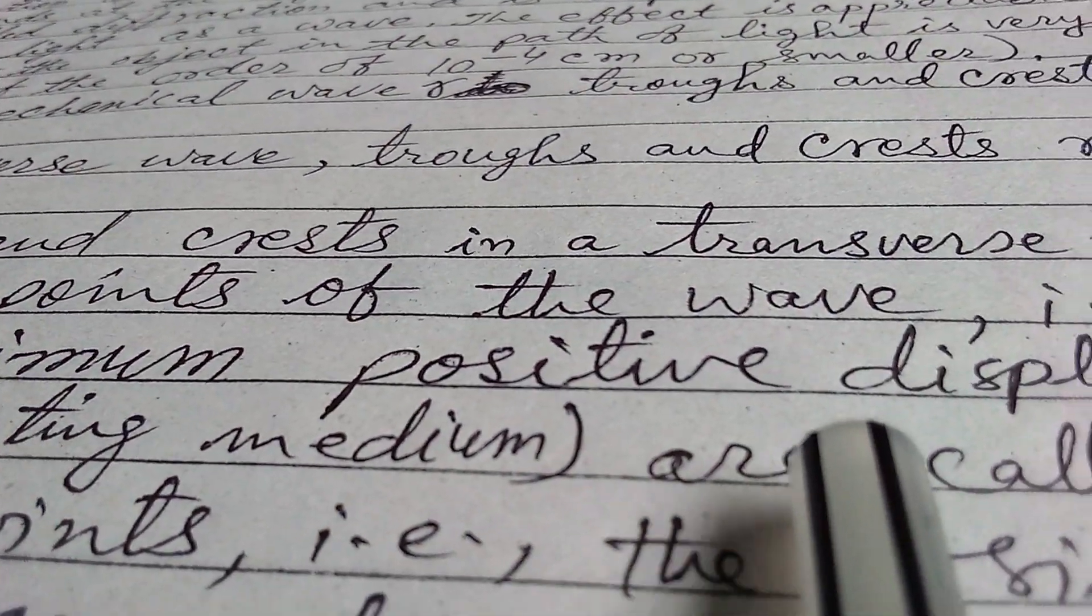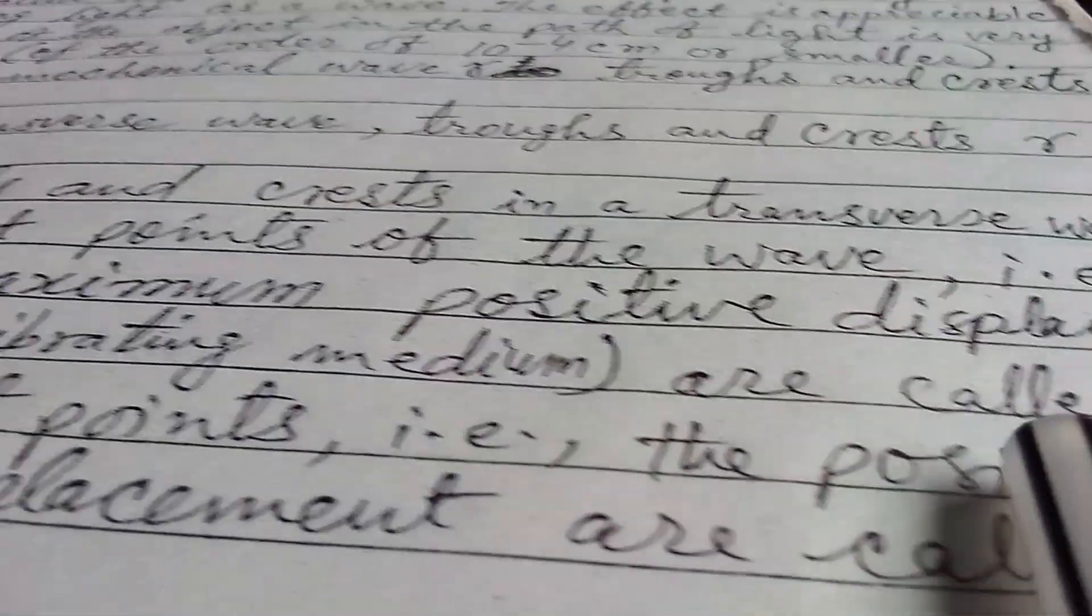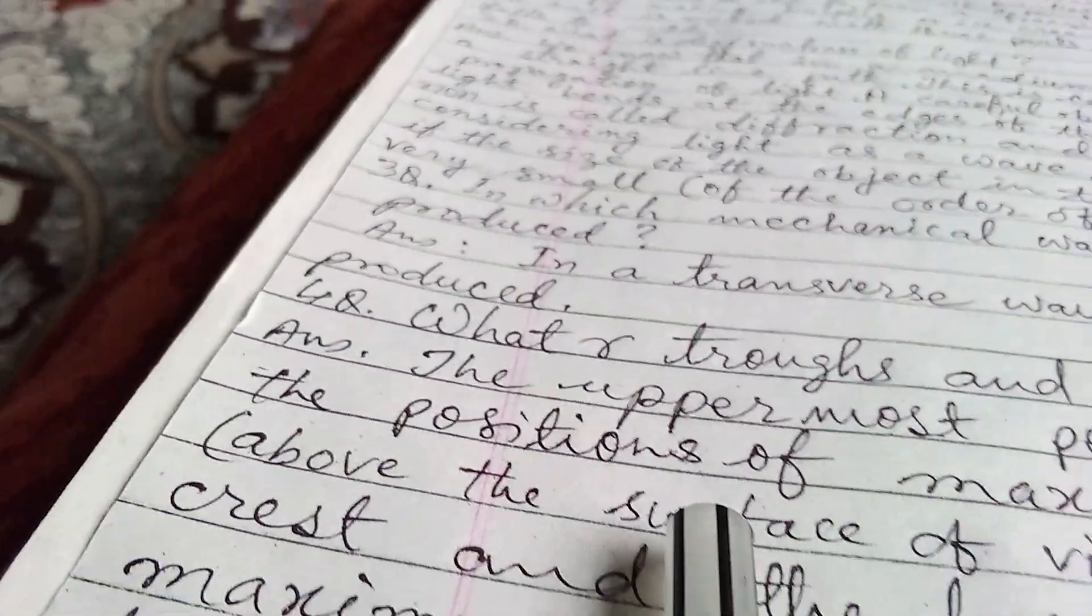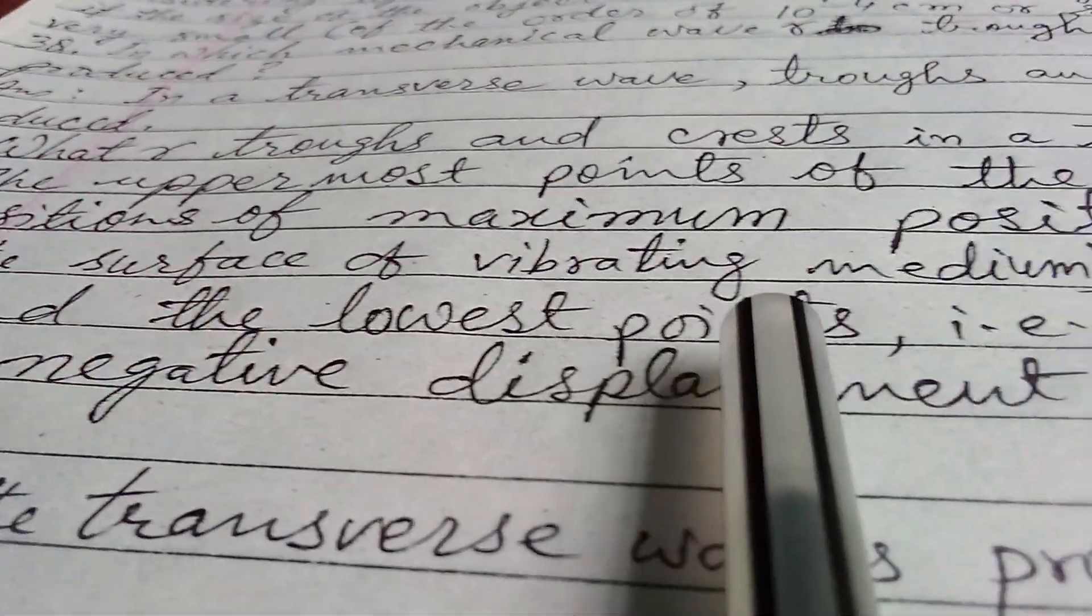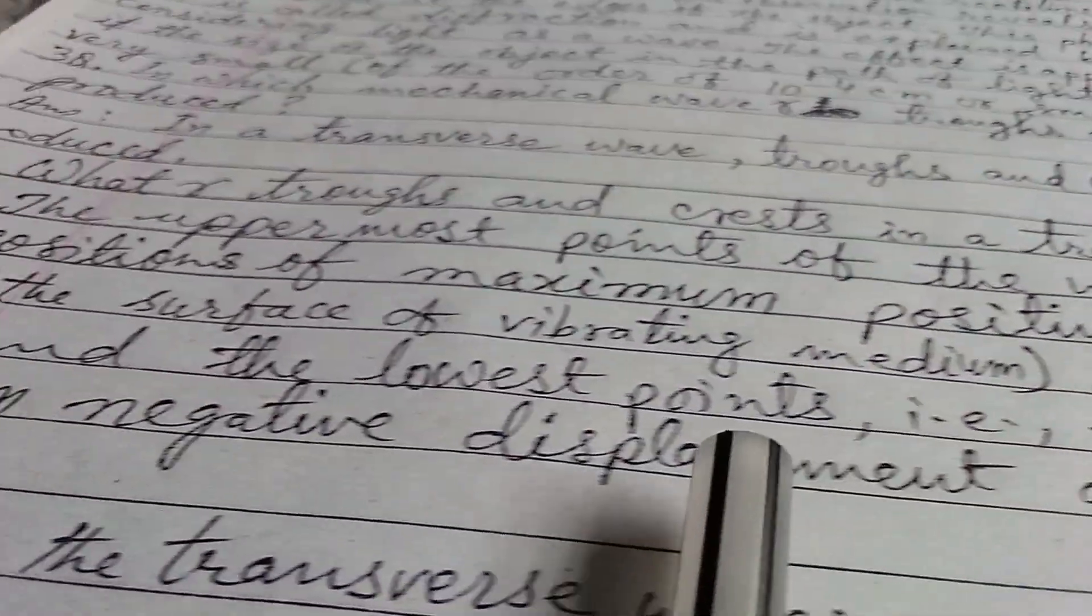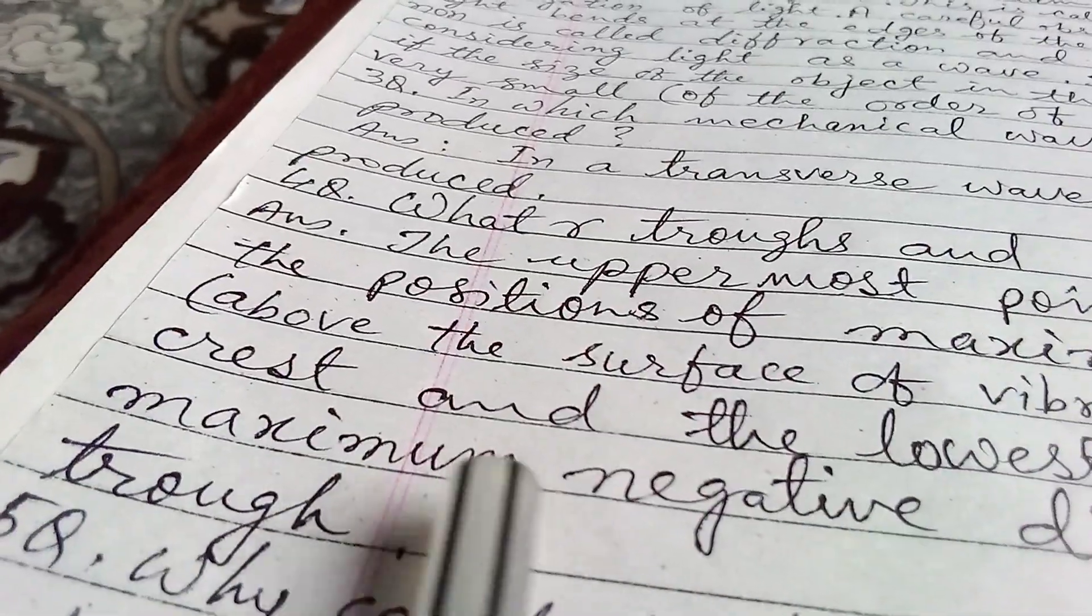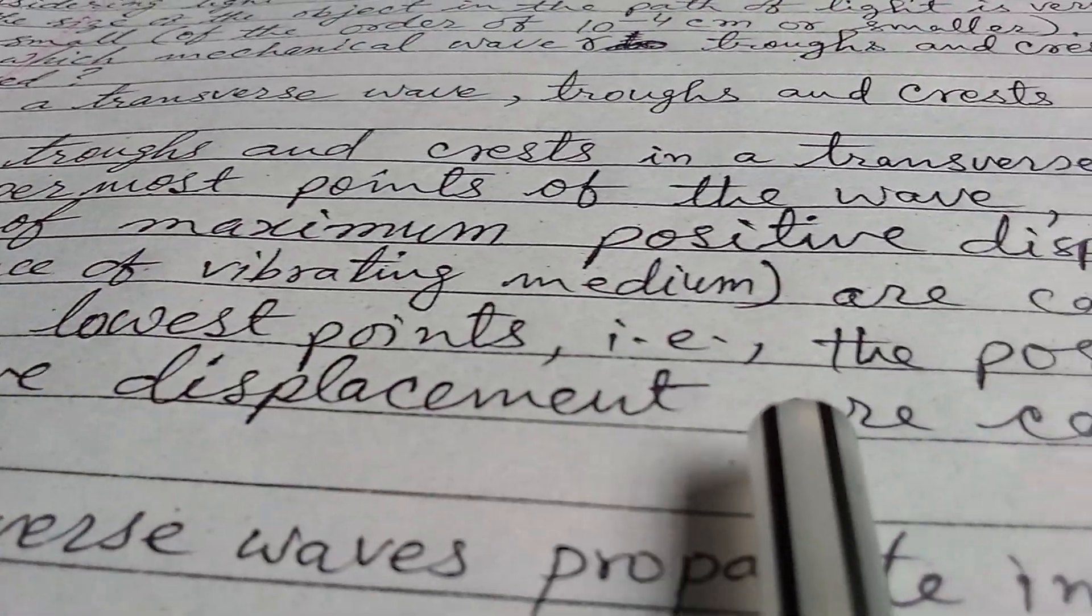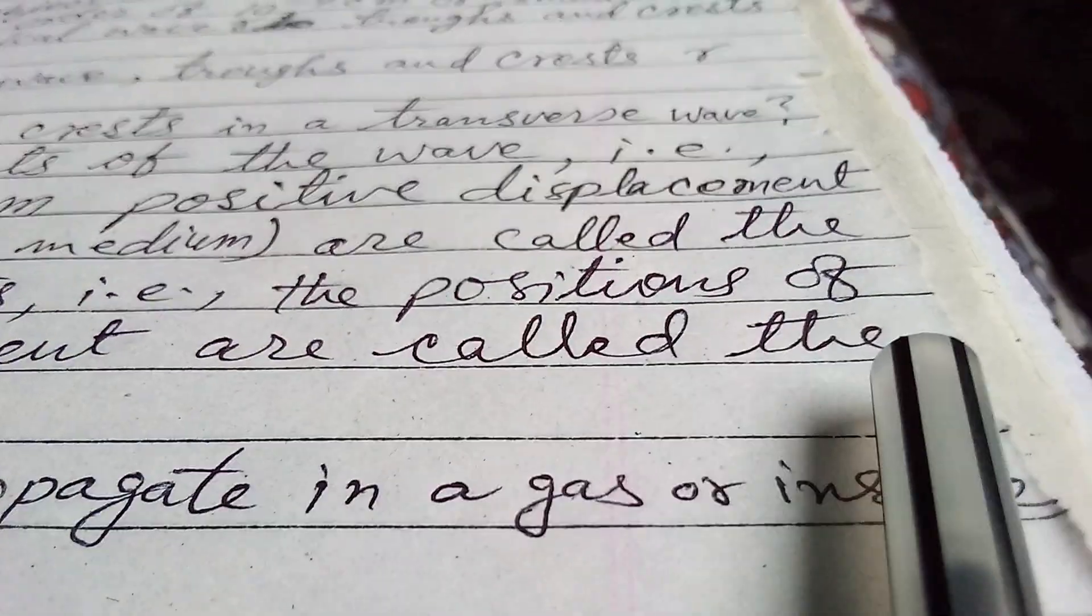...above the surface of the wave-bearing medium are called the crests, and the lowest points, that is, the positions of maximum negative displacement, are called the troughs.